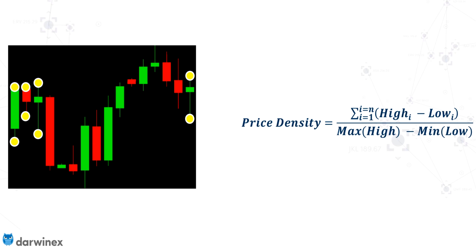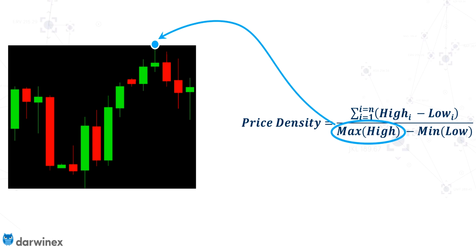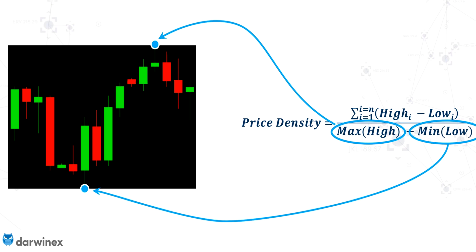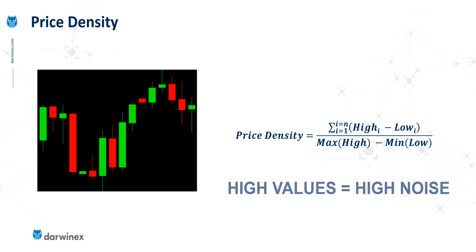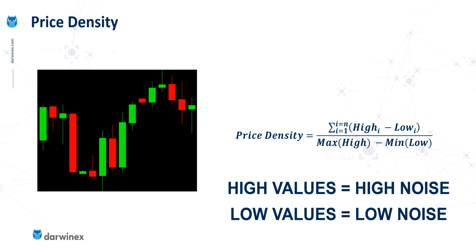Next, the denominator simply uses the maximum value from all of the highs of those bars, subtracts the minimum low out of all of the bars — and so this gives us the range, or the height of the box. If there's a lot of price fluctuation compared to the actual range, we'll have a high value, which gives the indication that we have high levels of noise. If however those individual fluctuations are small compared to the range, we'll get a low value for the price density, and therefore have low levels of noise. So now we have a way of quantifiably measuring this that we can backtest to see how it affects our strategies.